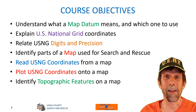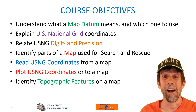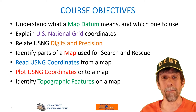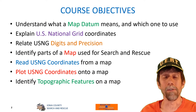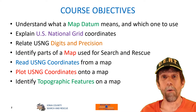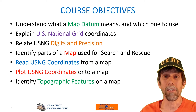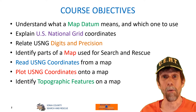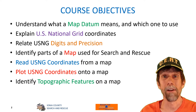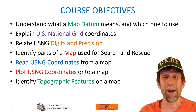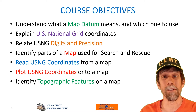When you're done with this course you should understand the meaning of a map datum and why that's important to us. You should understand the US National Grid coordinate system and its different parts. You should understand how we use different numbers of digits in specifying coordinates to relate a degree of precision in the location. You should be able to identify the important parts of the map we use for search and rescue, take a USNG coordinate to a map and from a map — reading coordinates off a given point, or finding the corresponding point on a map given coordinates. And finally you should be able to identify the most important topographic features and understand what those mean when you're out in the woods.